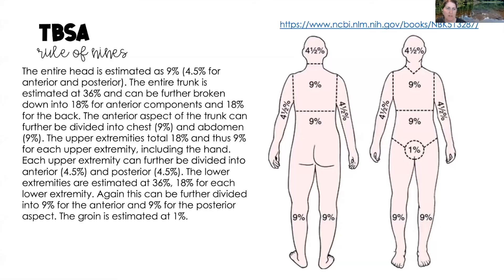Let's start with TBSA using the rule of nines. On this picture, you'll see images similar to what you've seen from your instructors or textbook. Starting at the top of the body, the total head is 9%. The front of the head (anterior) and the back of the head (posterior) are both four and a half percent each, so front is four and a half, back is four and a half.